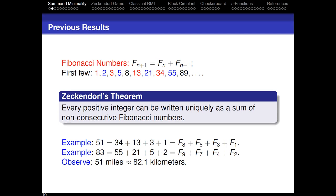This is probably the most useless application of the Fibonacci numbers known to man, woman, and child. If you take your Fibonacci decomposition and increase all the indices by one, you go from 51 to 83. And 51 miles is approximately 82.1 kilometers. The conversion factor between miles and kilometers is almost the golden mean, and as the Fibonacci numbers get larger, each Fibonacci number is approximately the golden mean times the previous. So if you're traveling in a foreign country, you can use this to quickly convert between miles and kilometers.